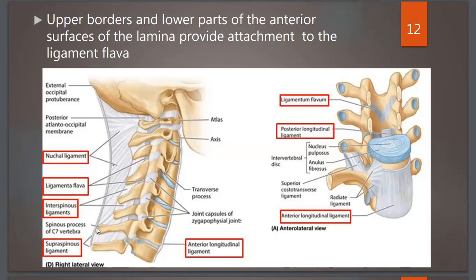The intervertebral disc found between the vertebrae has a central nucleus pulposus surrounded by fibers arranged in concentric circles called annulus fibrosus. The anterior aspect of the body has attachment of the anterior longitudinal ligament, and the posterior aspect has the posterior longitudinal ligament. Between the laminae we see the ligamentum flavum.